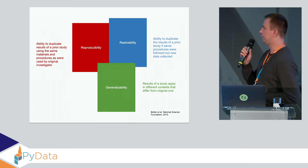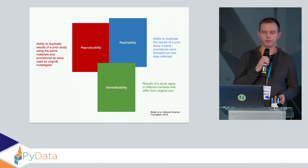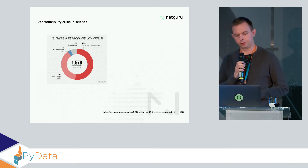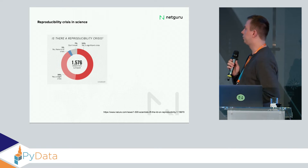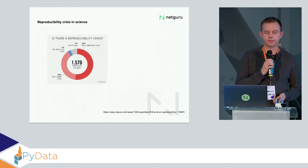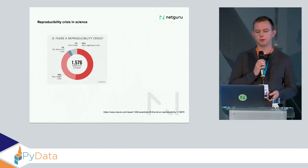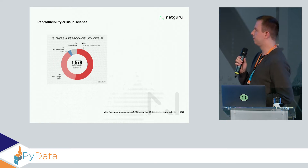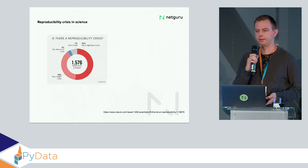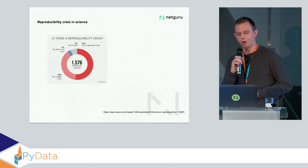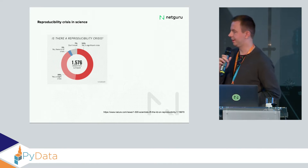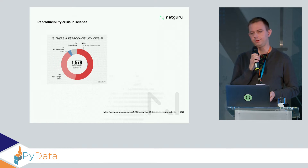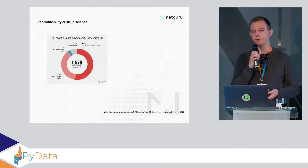Generalizability is something we want to aim for in research, but we already have problems with reproducibility. Some time ago, Nature conducted a survey asking scientists whether they think there is a reproducibility crisis in science in general. Almost 90% — exactly 90% — think that there is, and more than 50% think it is a huge crisis.